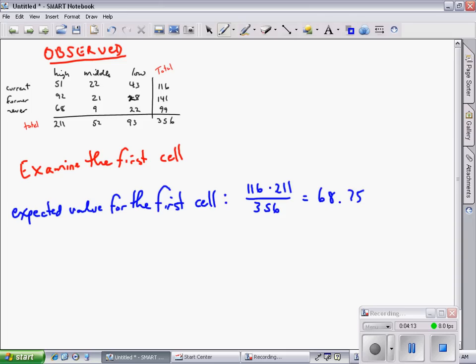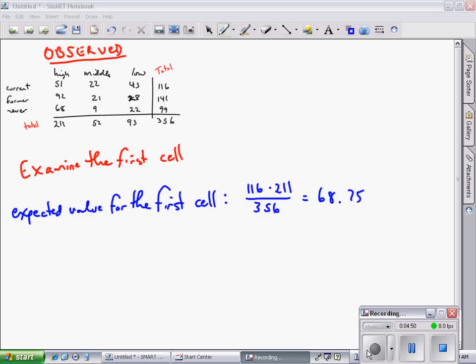If the null hypothesis was true, if there's no association between smoking status and socioeconomic status, then I would have expected to see 68.75 in the first cell. What I actually saw was 51. Now I want to measure how wrong I was or how much different than expected I was. We'll sum that up for all the table, and if that's way different, then we decide H0 must not be true. I would continue this process for each of the nine cells.